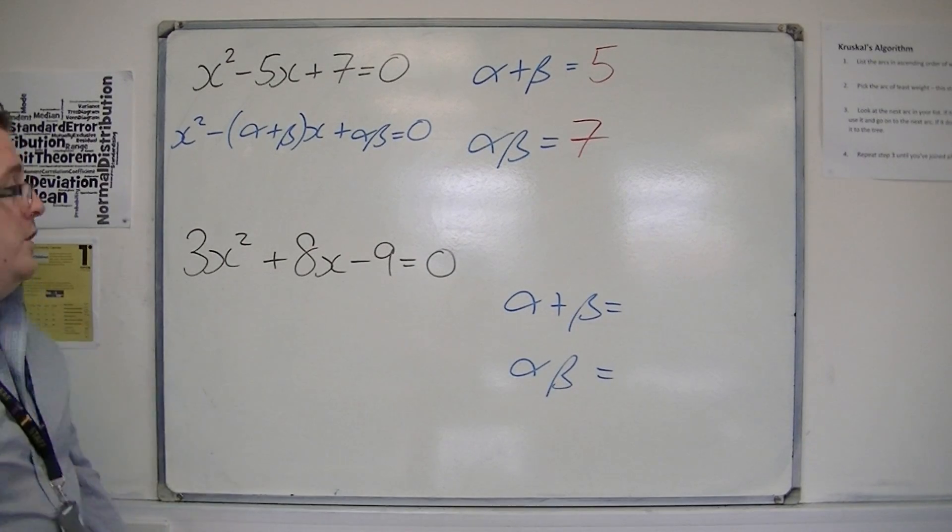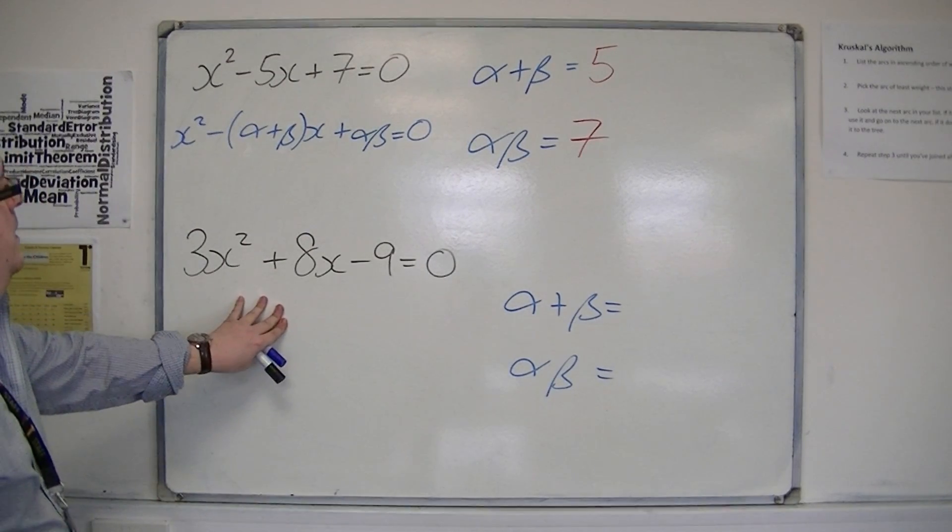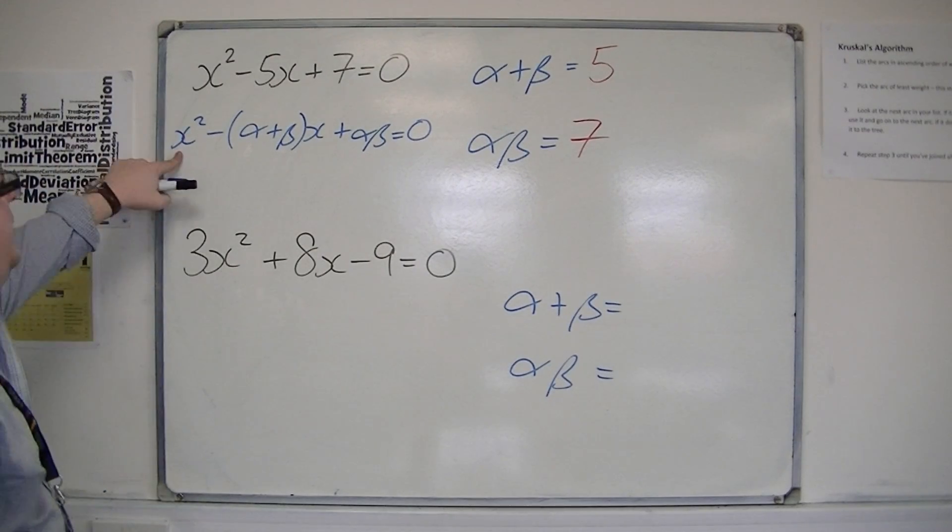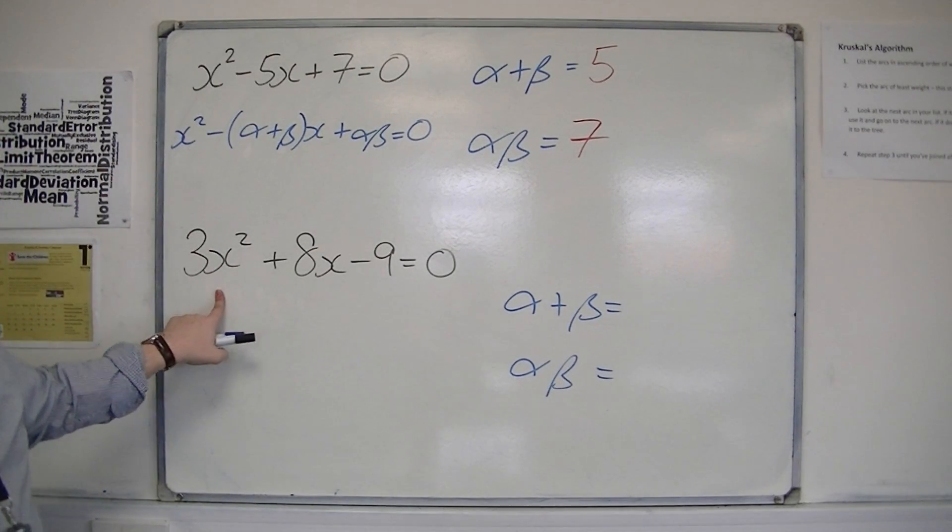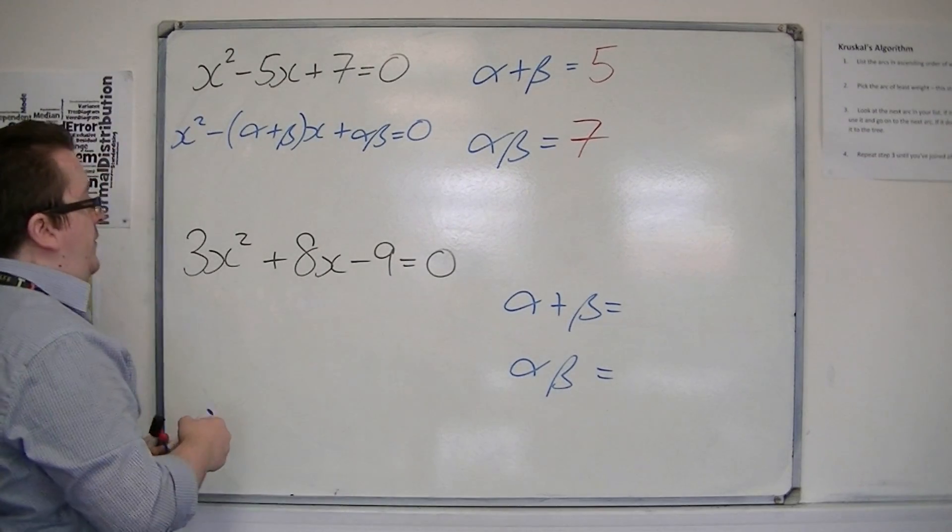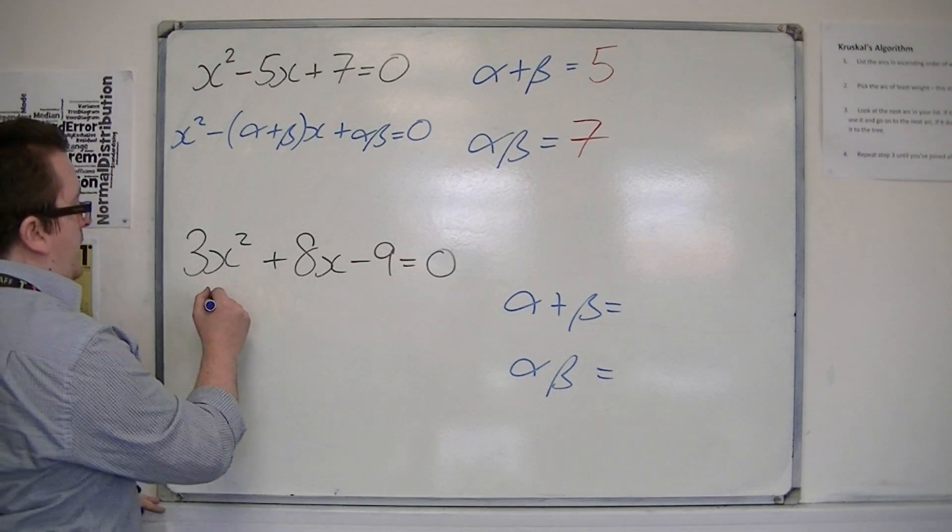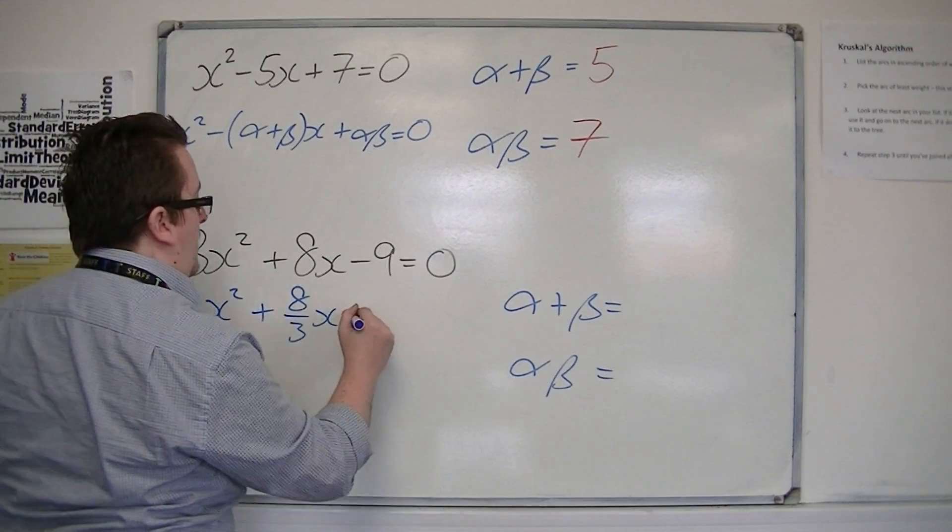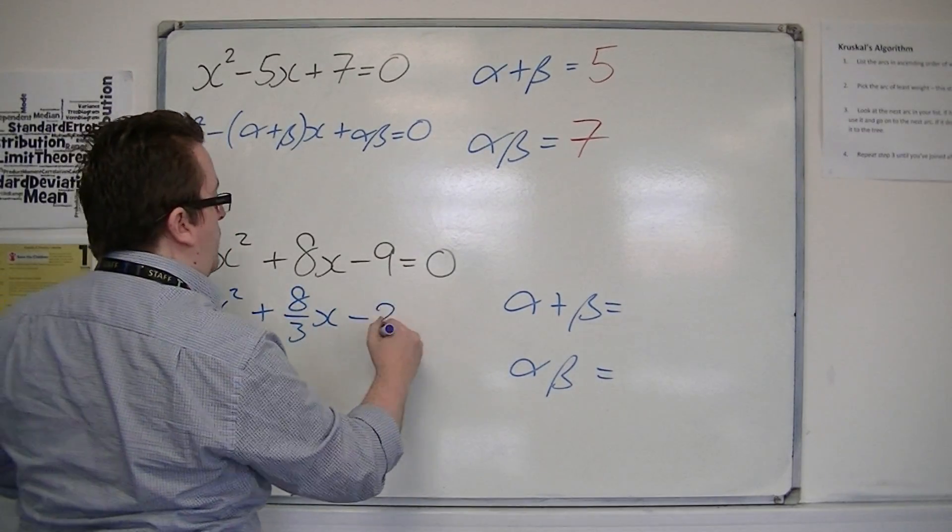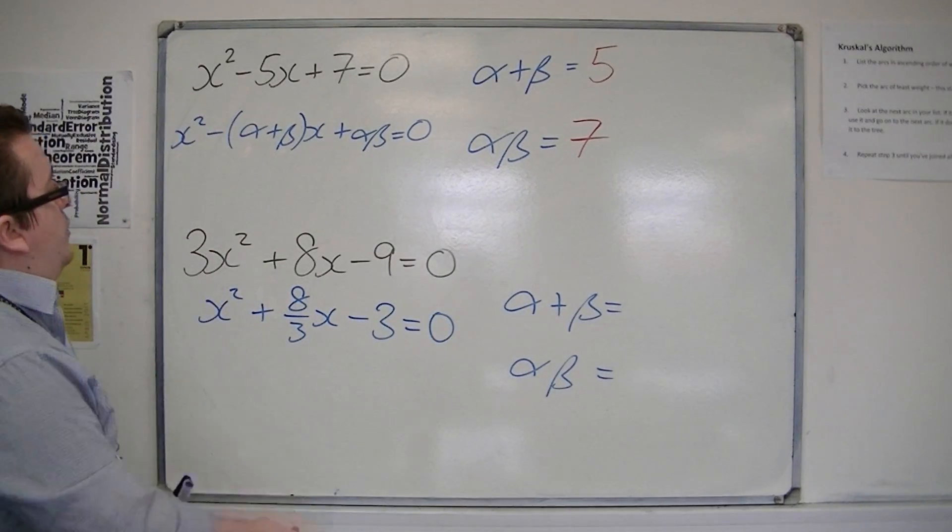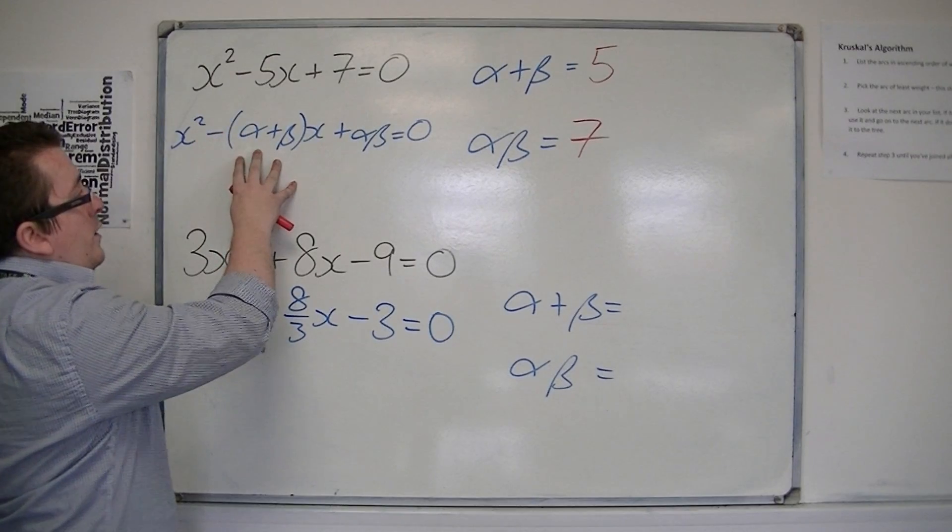If you're looking at an equation of this format though, these are not instantly comparable because this is x squared but this is 3x squared. So you must divide through by 3 first before you do anything. So we've got x squared plus 8 over 3x minus 9 over 3, so minus 3 equals 0. Now you can look at this and say, well, looking at that,